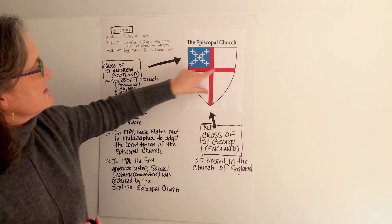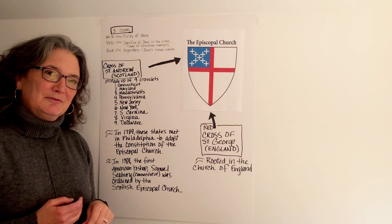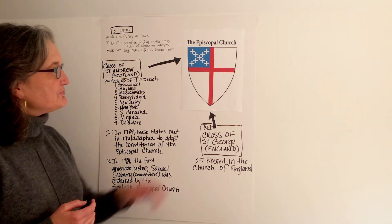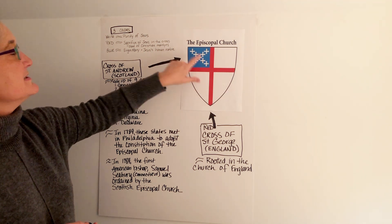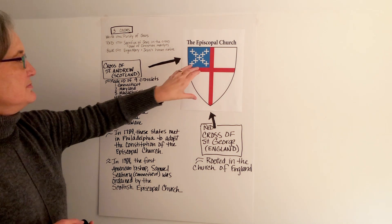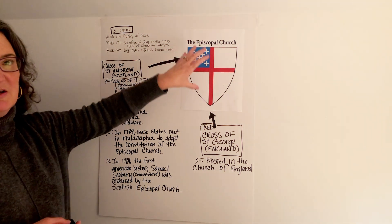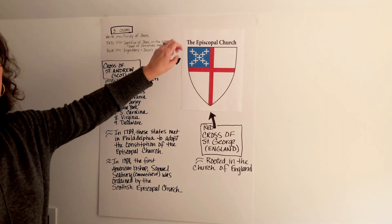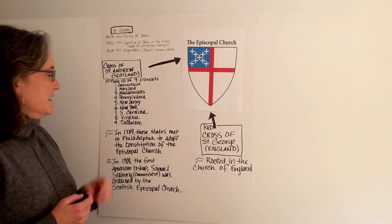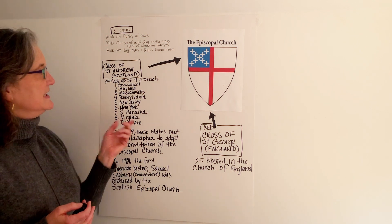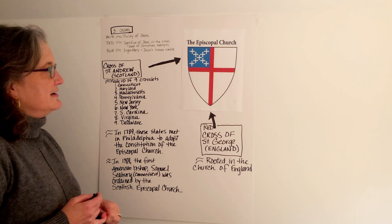And then the red cross is the cross of St. George, symbolizing our roots in the Church of England. We've got England and Scotland, and that Scottish cross is made up of nine crosslets. Those nine crosslets symbolize the nine states whose representatives came together in the city of Philadelphia in 1789 to sign the Constitution of the Episcopal Church. So 1789 was the first general convention of the Episcopal Church, and nine states were represented.